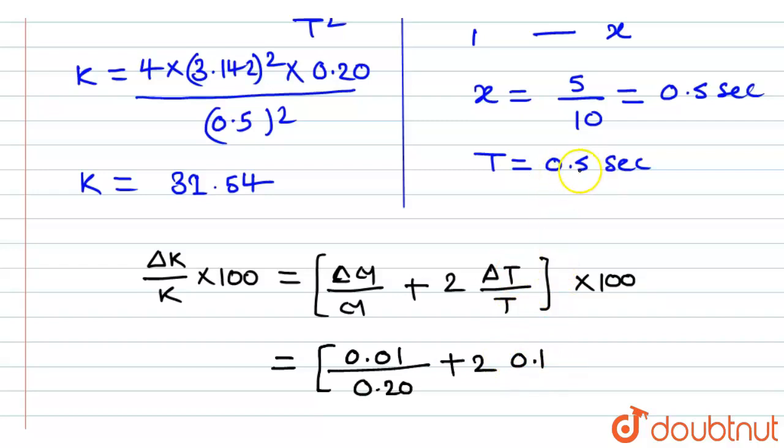Plus twice the value of ΔT that is the least value measured is 0.1. As the time period is 0.5, the least value that can be measured is 0.1 divided by the value of T. But here we have to take the value of T as 5 seconds because it is number of oscillations that is 10 multiplied by time period that is 0.5 into 100.